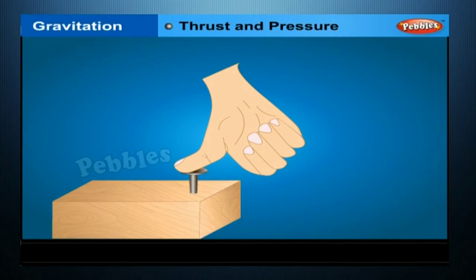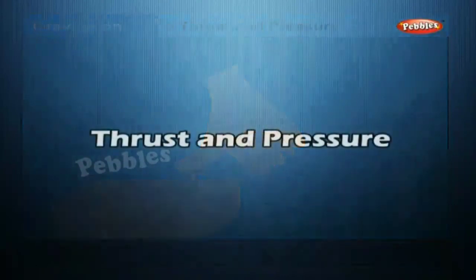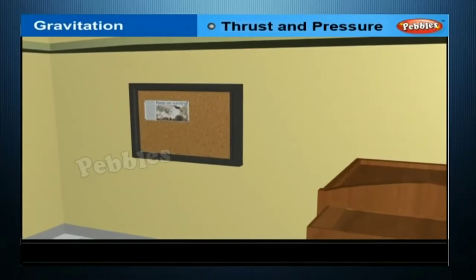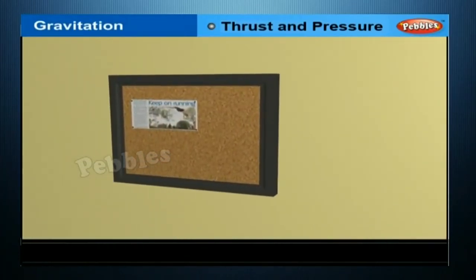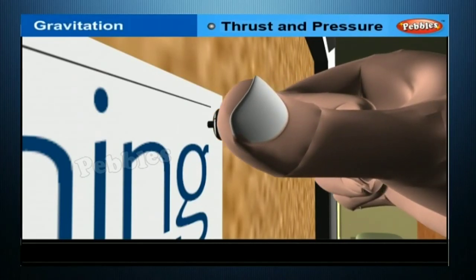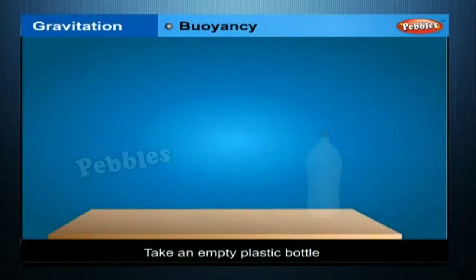Pressure is the force acting on a unit area of the object. The effect of a force depends on the area of the object on which it acts. To fix a poster on a bulletin board, you press drawing pins with your thumb perpendicular to the board. The force applied on the head of the pin acts on a smaller area at the tip, driving the pin into the board.